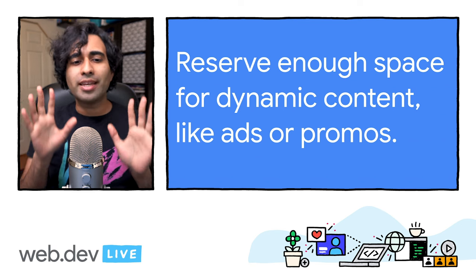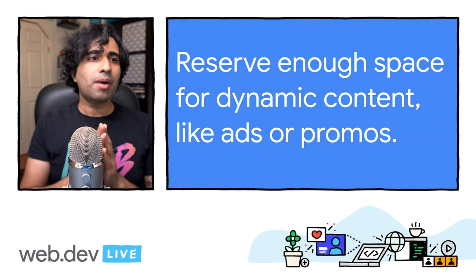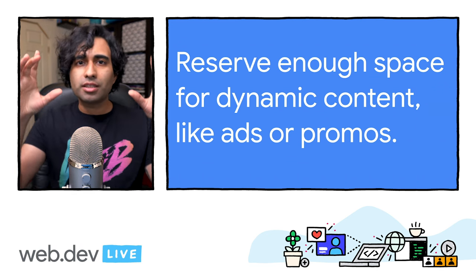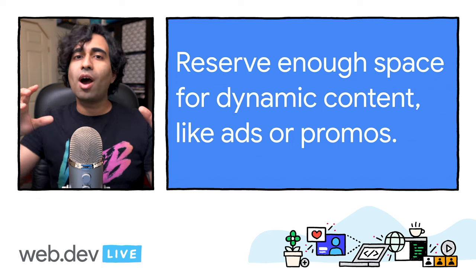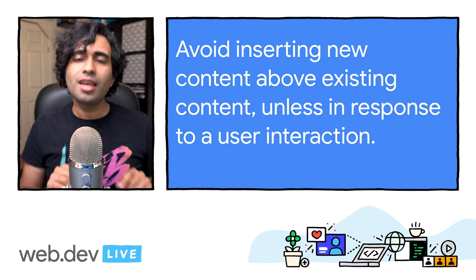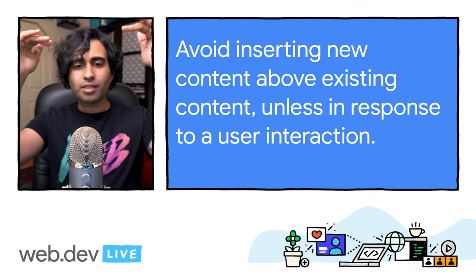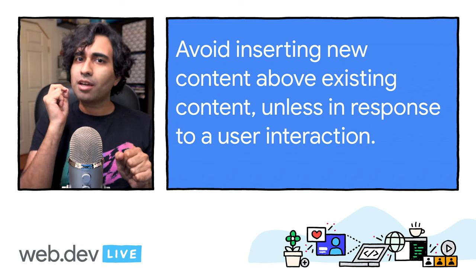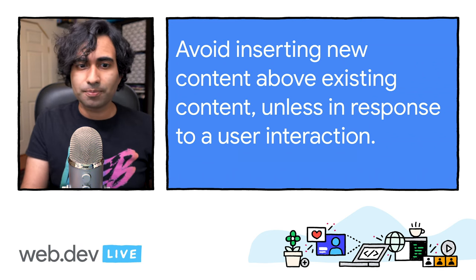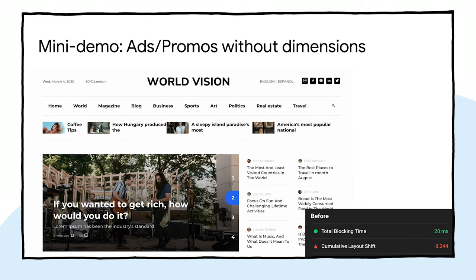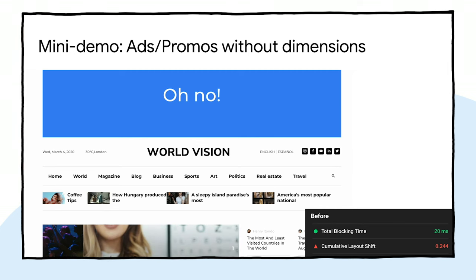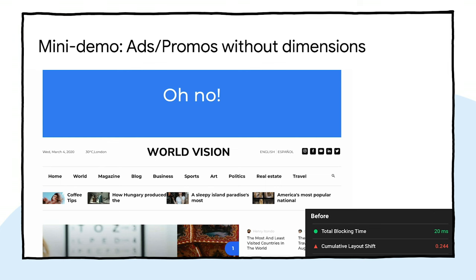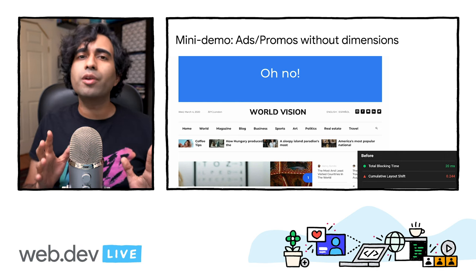Reserve enough space for any of your dynamic content — things like ads or promos. Make sure you're giving that content a container it won't break out of and suddenly cause page shifts. A related tip: avoid inserting new content above existing content unless it's in reaction to a user interaction. Ads, iframes, and promos can sometimes be the largest contributors to layout shifts on the web. Dynamic ad sizes can increase revenue by offering flexibility, but they can also negatively impact user experience by pushing content down.